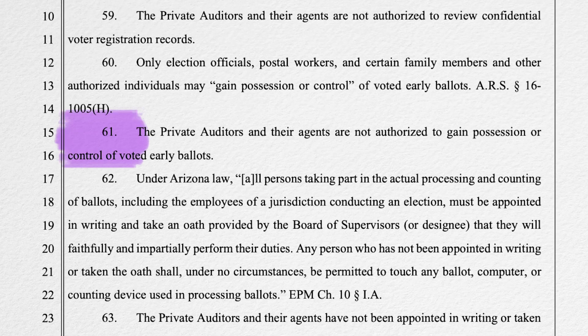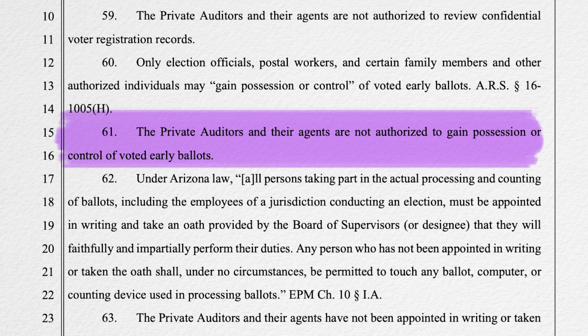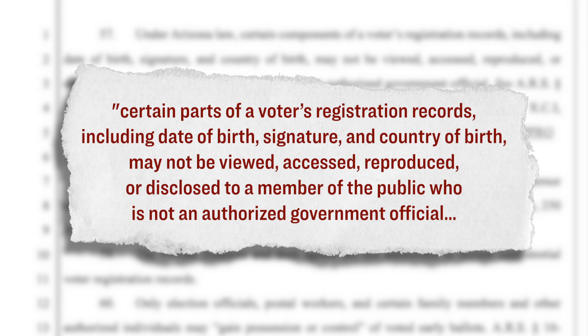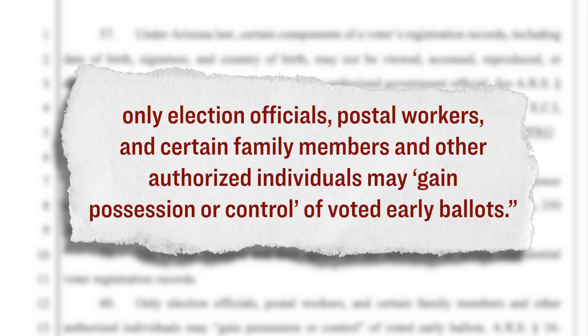Specifically, what they were arguing is that some of the private companies that the Arizona Senate contracted to conduct this audit were not authorized to review confidential voter registration records and not authorized to gain possession or control of voted early ballots. To be very precise, they said that according to Arizona state law, certain parts of a voter's registration records, including date of birth, signature, and county of birth, may not be viewed, accessed, reproduced, or disclosed to a member of the public who is not an authorized government official. Only election officials, postal workers, and certain family members and other authorized individuals may gain possession or control of voted early ballots.